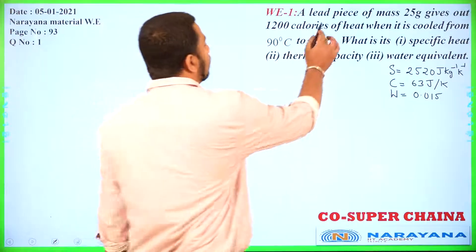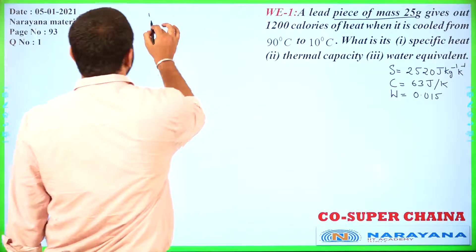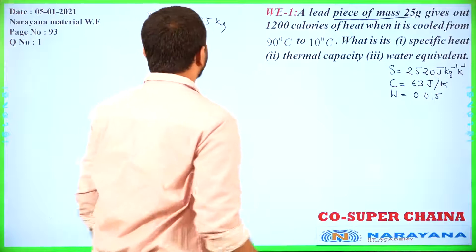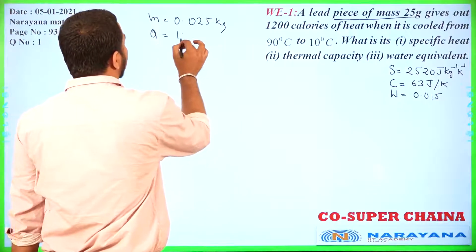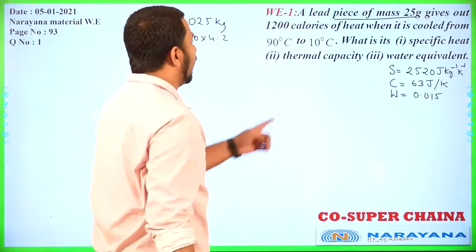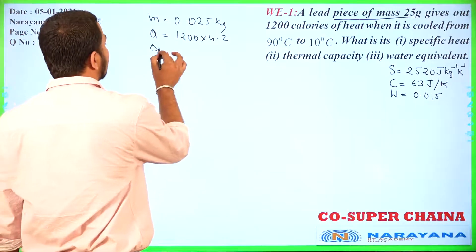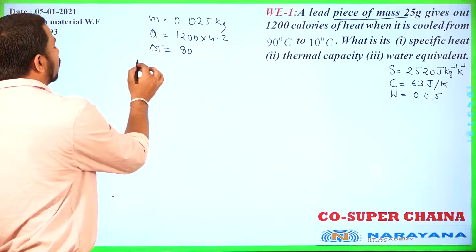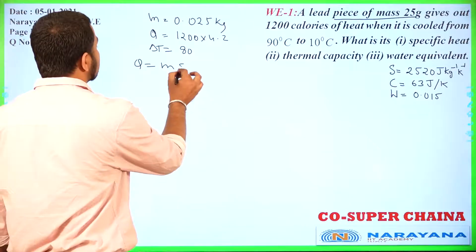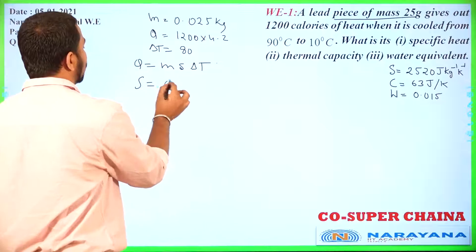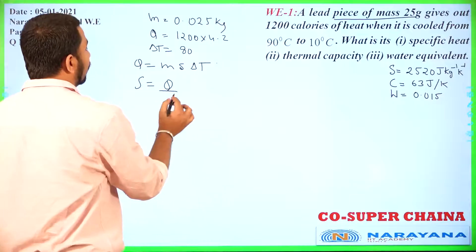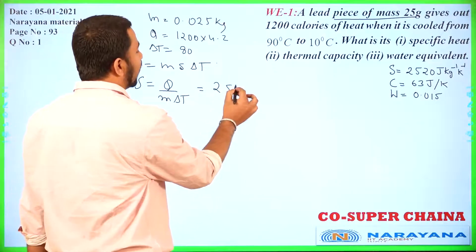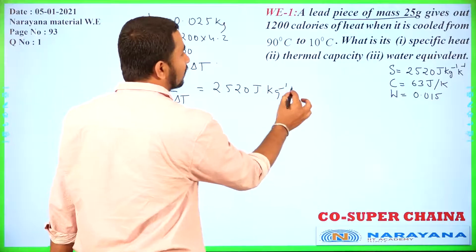First question: a lead piece of mass 25 gram. We will convert this mass into kg: 0.025 kg. The calorie value Q is given in calories, so we will convert this to joules. The temperature difference delta T is 80. Use the formula Q equals ms delta T. From here, s will be Q by m delta T. Substituting the values, we get s as 2520 joule per kg per kelvin.